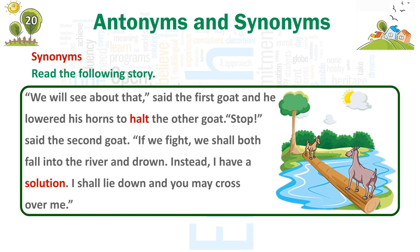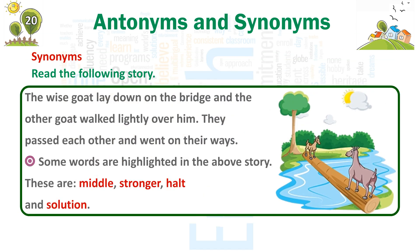'Stop,' said the second goat. 'If we fight, we shall both fall into the river and drown. Instead, I have a solution. I shall lie down, and you may cross over me.' The wise goat lay down on the bridge, and the other goat walked lightly over him. They passed each other and went on their ways. Some words are highlighted in the above story: middle, stronger, halt, and solution.